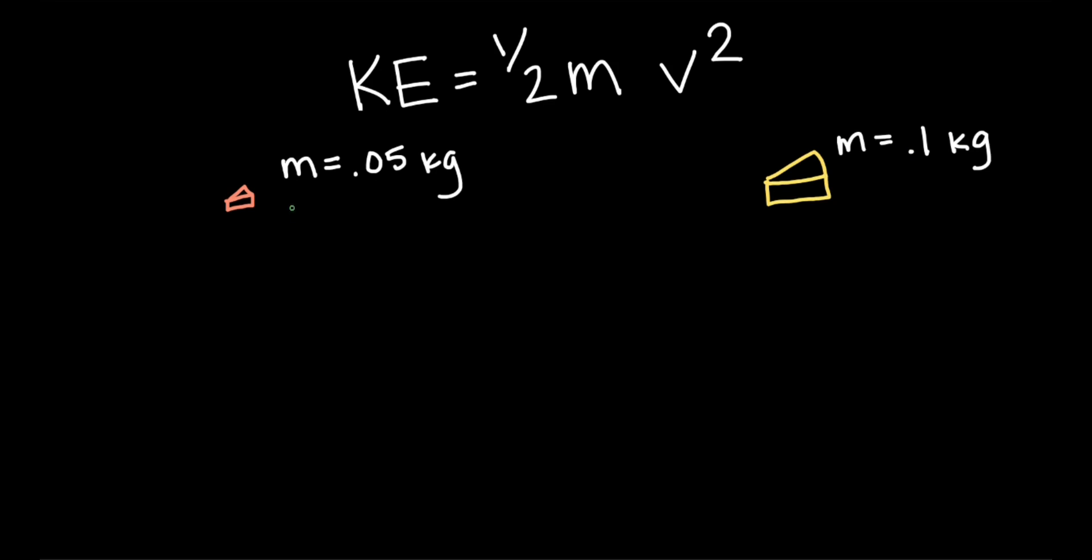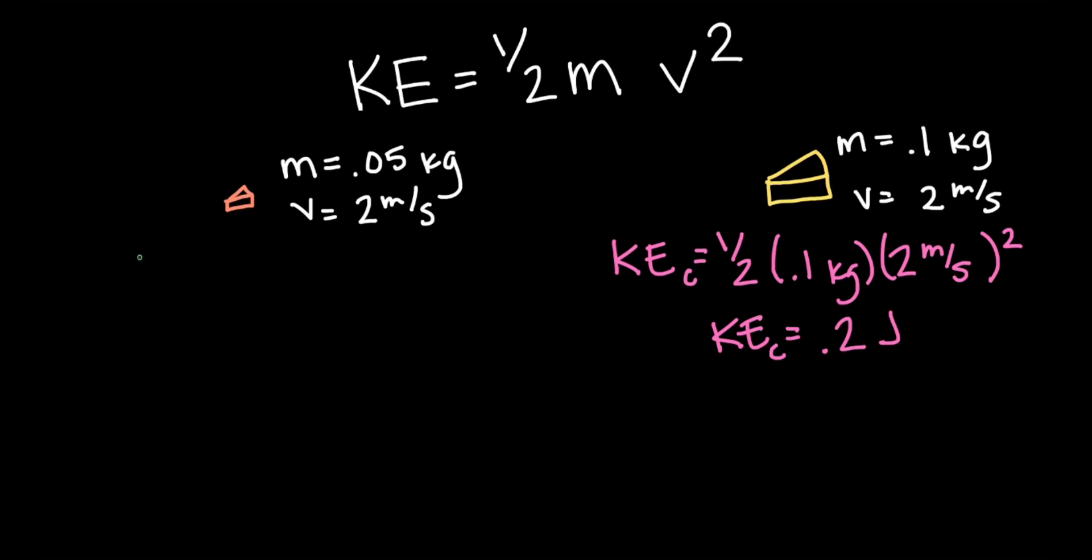When both cheeses have the same speed, say 2 meters per second, the cheddar's kinetic energy is one-half times 0.1 kilograms times 2 meters per second squared, which is 0.2 joules. The Swiss's kinetic energy is one-half times 0.05 kilograms times 2 meters per second squared, which is 0.1 joules, or half the kinetic energy of the cheddar.